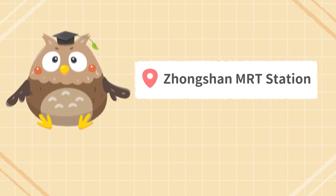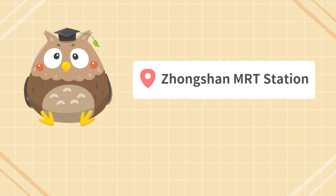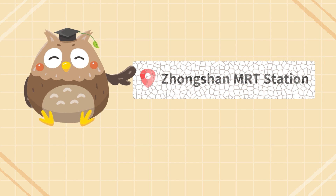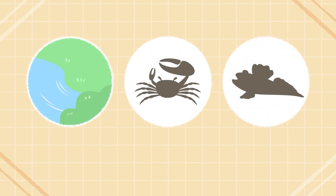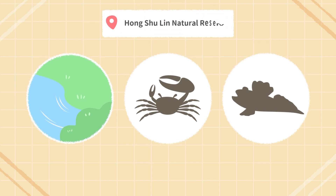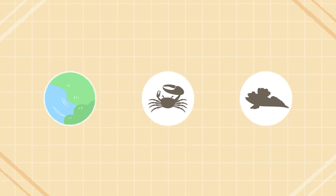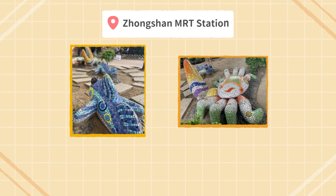Have you ever been to the neighborhood around Zhongshan MRT station? You can see a lot of public mosaic art pieces there. Do you know where to find mangrove forests, fiddler crabs, and mudskippers? These can be found in Hongshulin Natural Reserve, and we can also see them as public artworks at Zhongshan MRT station.